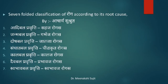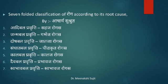Dosha Bala Pravrutti refers to Jataja Rogas — diseases arising from the vitiation of Doshas due to Mithya Ahara and Vihara. If Ahara and Vihara are not maintained correctly, diseases like Jwara and Rakta Pitta may occur. Next is Sangata Bala Pravrutti, which refers to Peedakruta Rogas — traumatic disorders including birth injuries or external injuries occurring after birth.